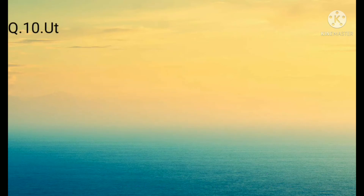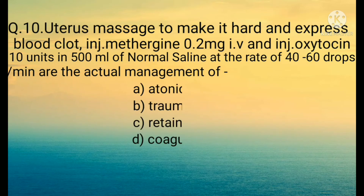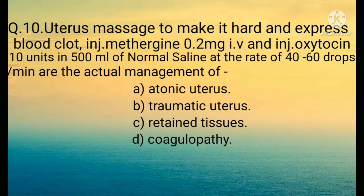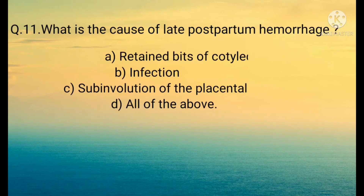Question number ten: Uterus massage to make it firm and express blood clots, injection Methergin 0.2 mg IV, and injection Oxytocin 10 units in 500 ml of normal saline at a rate of 40 to 60 drops per minute are the actual management of: A) Atonic uterus, B) Traumatic uterus, C) Retained tissues, D) Coagulopathy. The correct option is A) Atonic uterus.